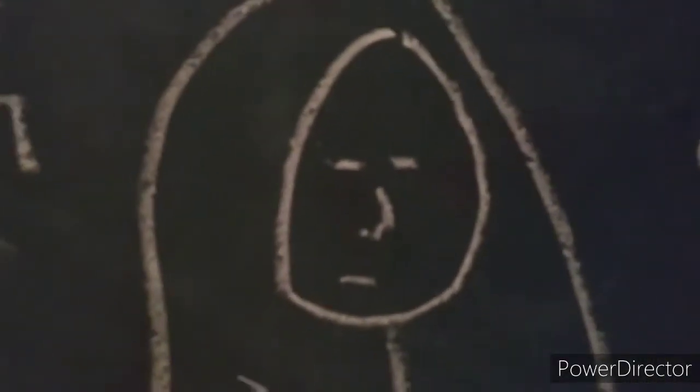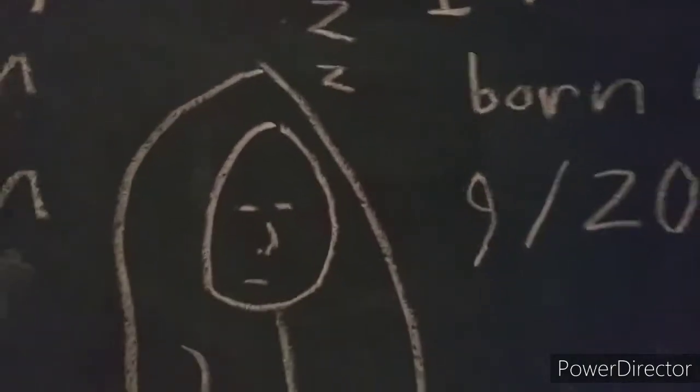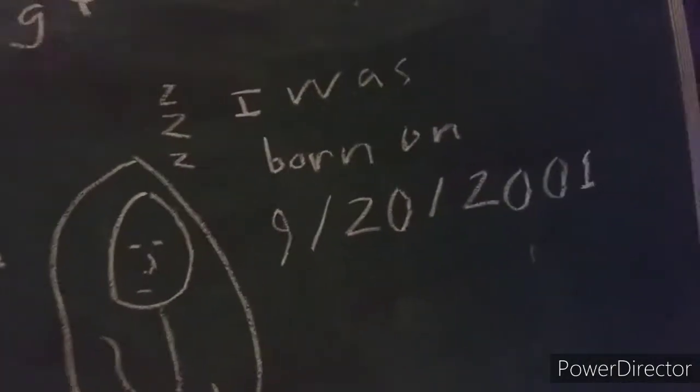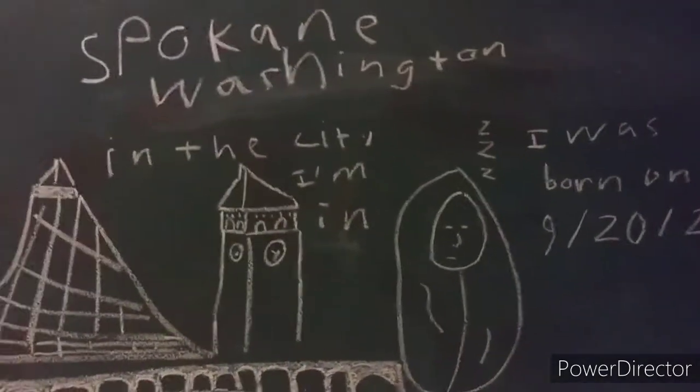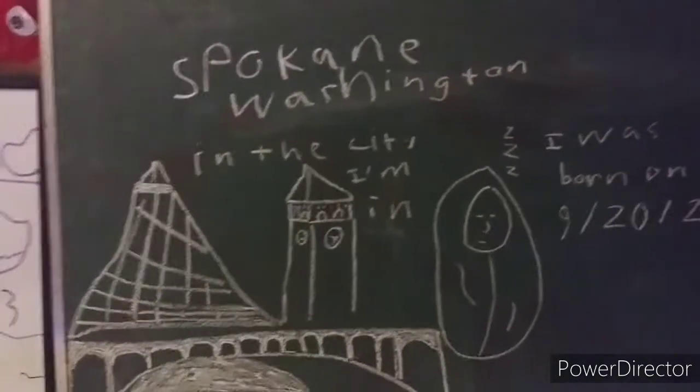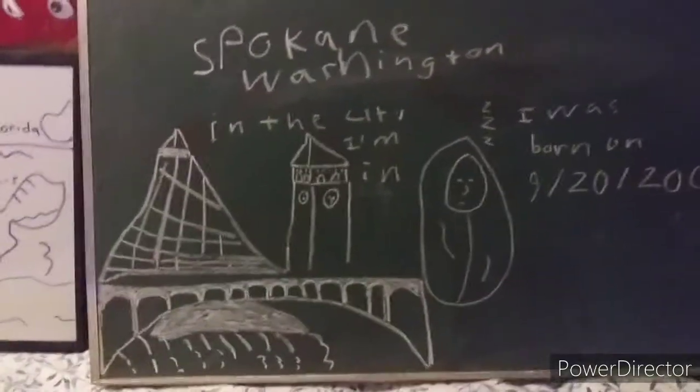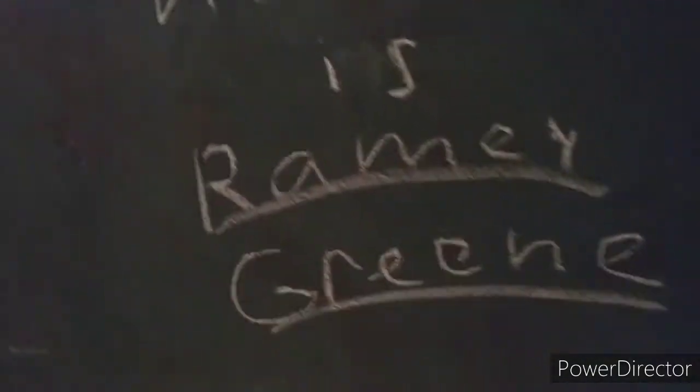Here's me as a cute little baby. I was born on September 20th, 2001 and I was born in the hometown that I'm now living in, which is Spokane, Washington. My full name is Raimi Green.